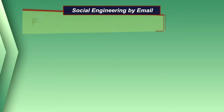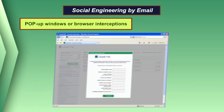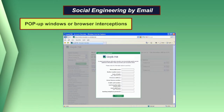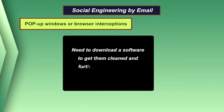Another example of social engineering by email is pop-up windows or browser interception. Pop-up messages inform users that they have lost their network connection and need to re-enter their username and password, or that their system has been infected with malware and they need to download software. These pop-ups are used to harvest sensitive information, which is then sent to attackers.